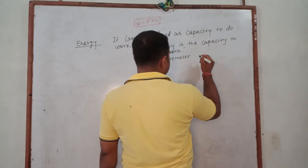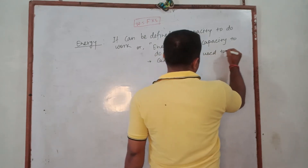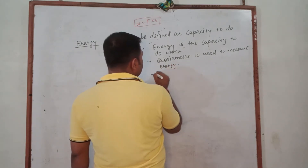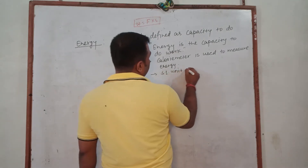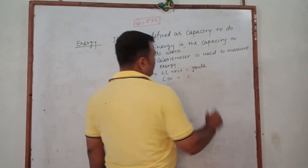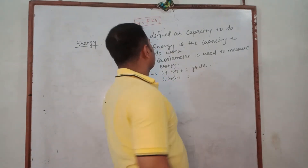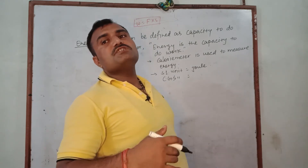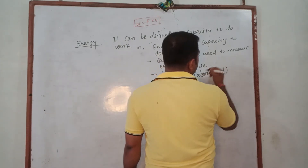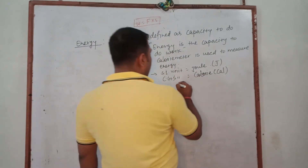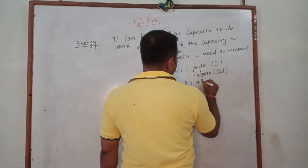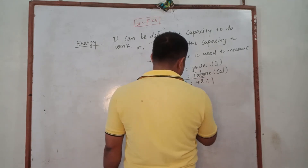Energy is measured using a calorimeter, which is used to measure energy possessed by an object. The SI unit of energy is Joule. The CGS unit of energy is Erg, but the CGS unit of heat energy is called Calorie, represented in short as Cal. Joule is represented by J.